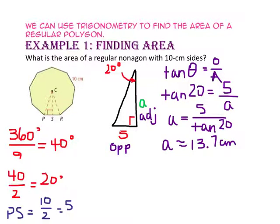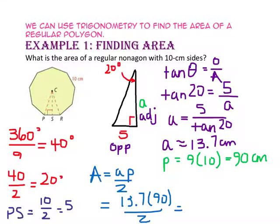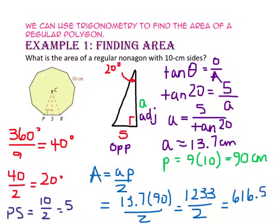To find the perimeter, since there are 9 sides in a nonagon and each side is 10 cm long, we will take 9 times 10 for 90 cm. Now let's use the formula to find the area of a regular polygon: area equals the apothem times the perimeter divided by 2. We substitute 13.7 for the apothem and 90 for the perimeter. 13.7 times 90 is 1,233, and divided by 2, the area of the regular nonagon is approximately 616.5 cm squared.